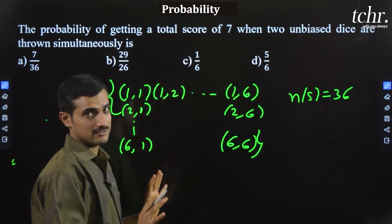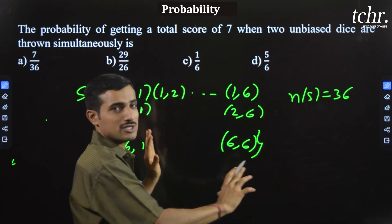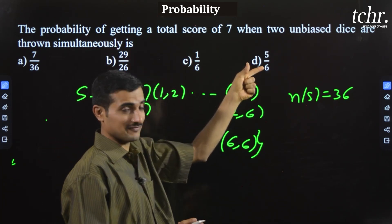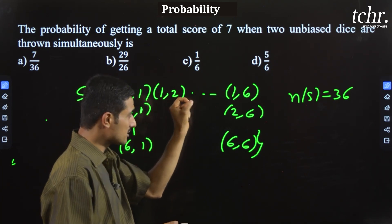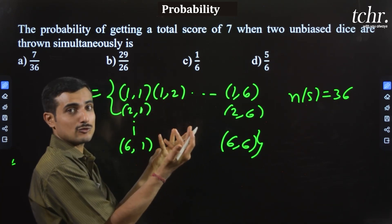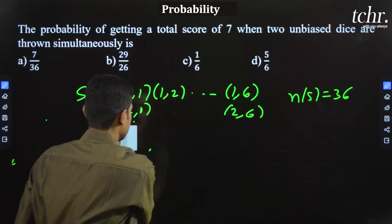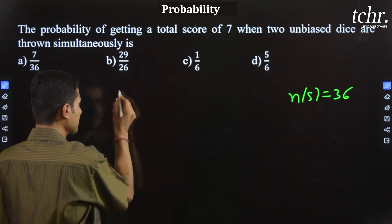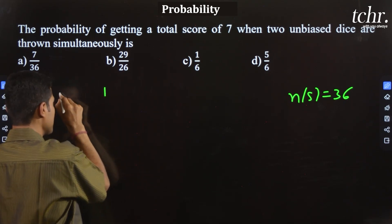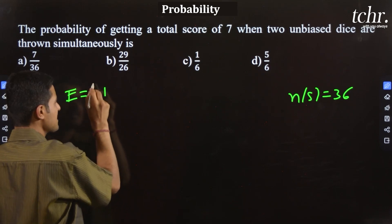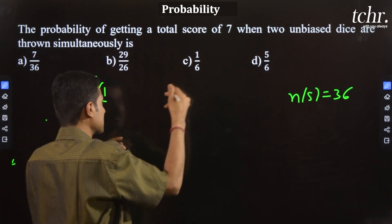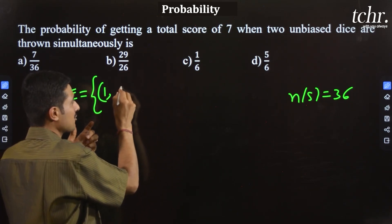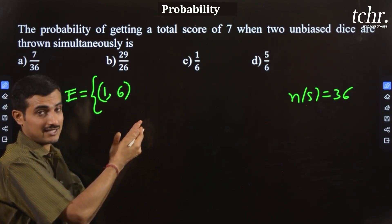This is the number of outcomes in the sample space — 36. Now the question asks for the probability of getting a total score of seven. We need to list all pairs from the two dice whose sum equals seven. When one die shows one and the other shows six, the total is seven.